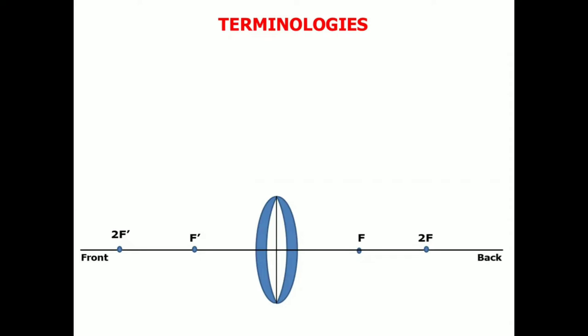For us to know the characteristics of images formed by convex lenses, we have to get familiarized ourselves with some terminologies. This is the usual ray diagram used to determine the characteristics of images formed by convex lenses.